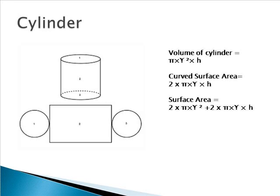The volume of a cylinder is: π × r² × h, where r is the radius and h is the height of the cylinder.